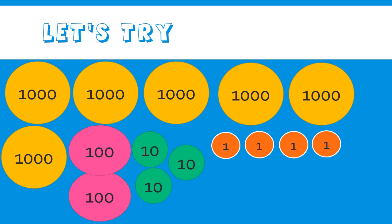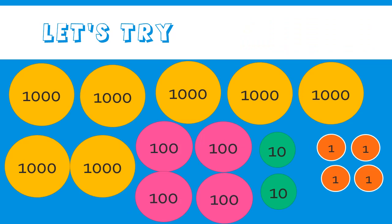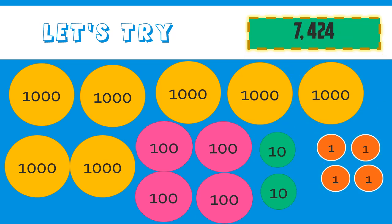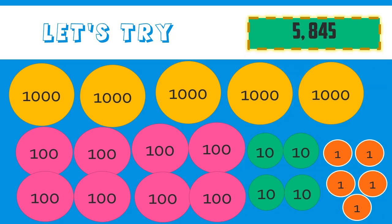This time it's your turn. Try to identify the number represented by the given number discs. Very good — you have six thousand two hundred thirty-four. Let's try another. Very good — you have seven thousand four hundred twenty-four. Let's try the last example. Very good — we have a total of five thousand eight hundred forty-five.